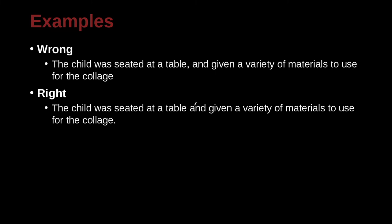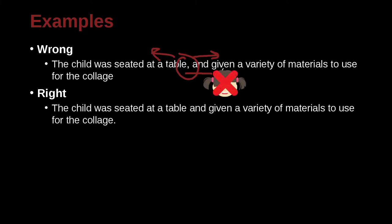'The child was seated at a table and given a variety of materials to use for the collage.' Here we have a comma before the conjunction. We need to ask: can the part before be independent, and can the part after be independent? 'The child was seated at a table' — yes, that's good. 'Given a variety of materials to use for the collage' — that's no good because it has no subject. Since it's lacking a subject, we can use a conjunction but with no comma.